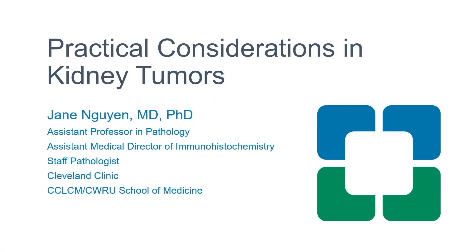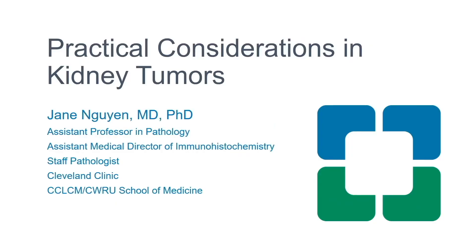I'm going to talk about kidney tumors today. In terms of the flow of the talk, I'm going to focus on how we arrive at certain diagnoses for renal tumors, because the spectrum of renal neoplasia right now is really expanding. I'll focus on diagnostic features and IHC markers that can help us reach certain diagnoses.